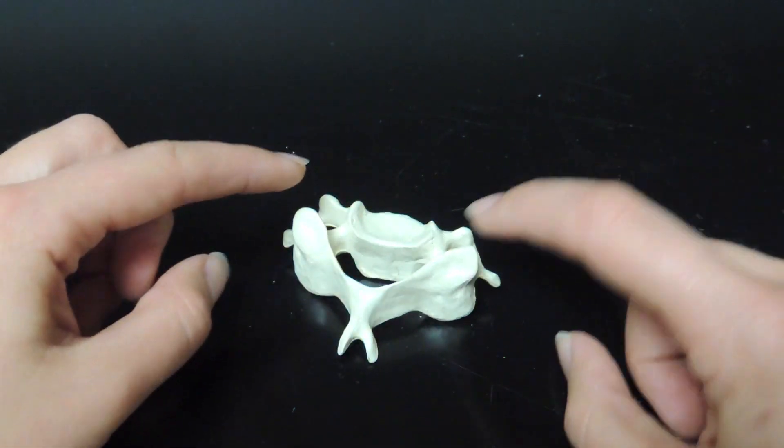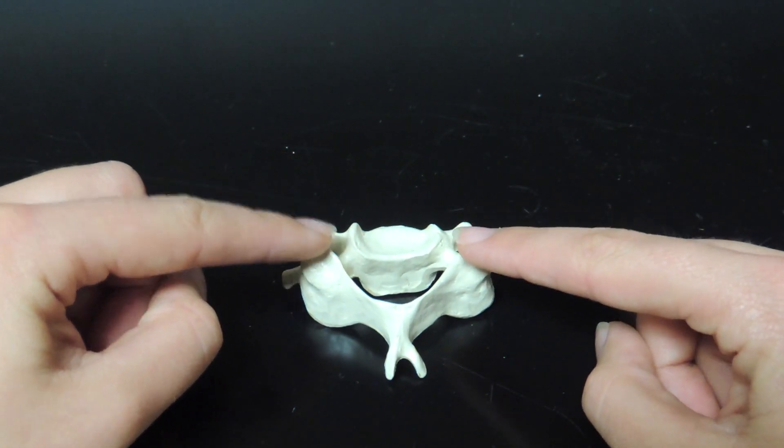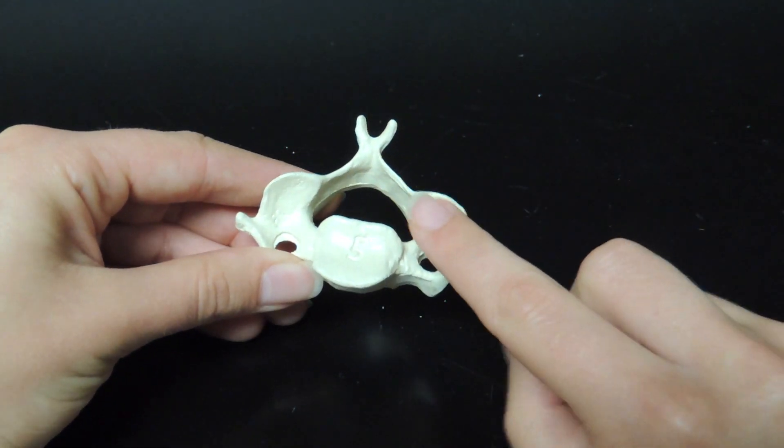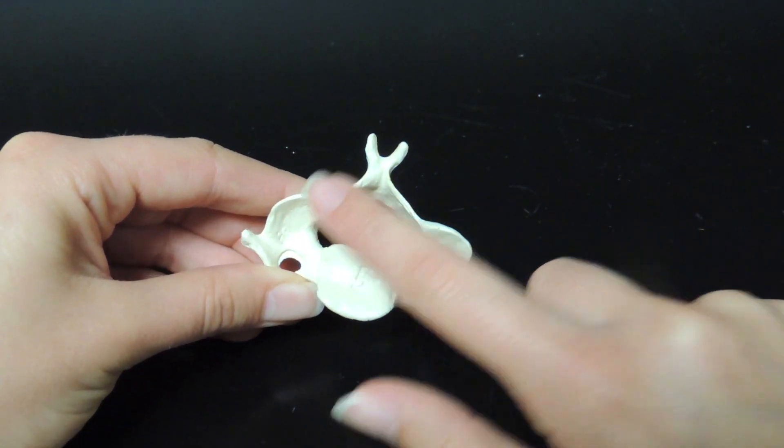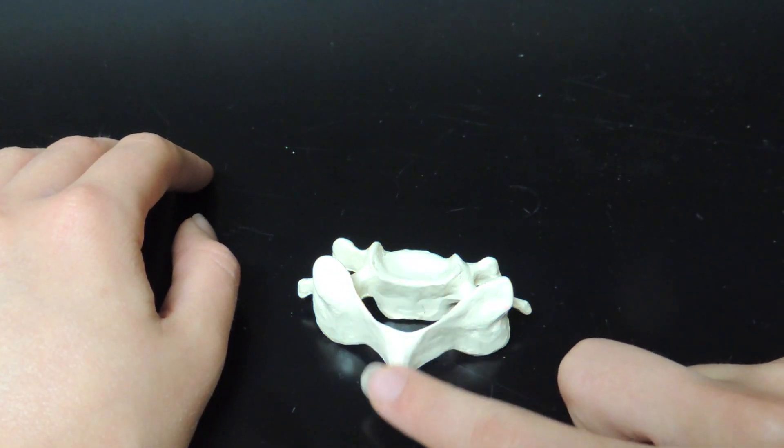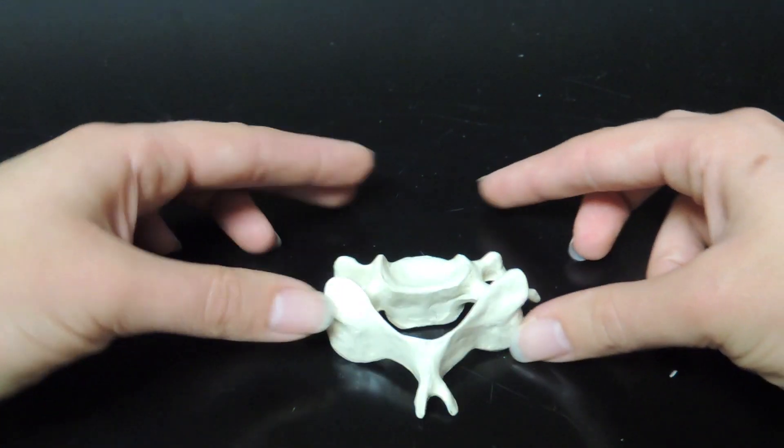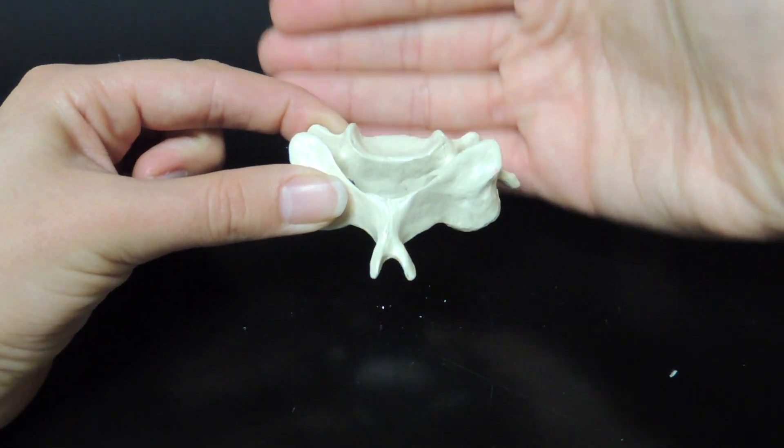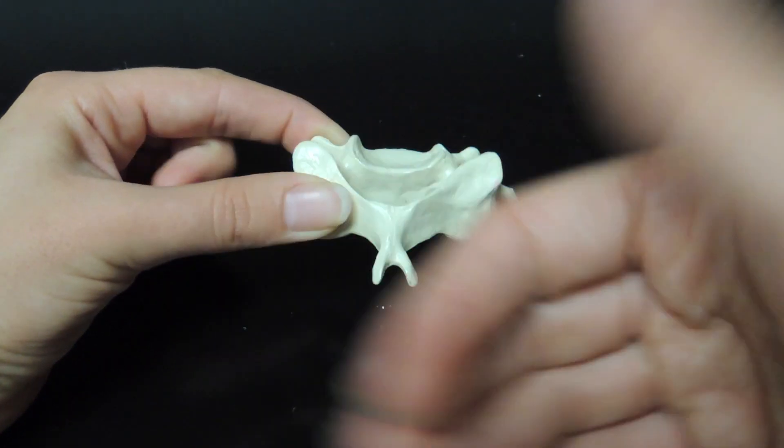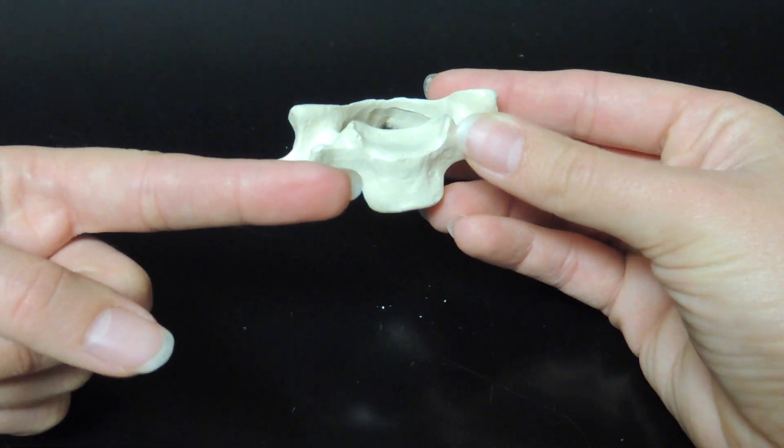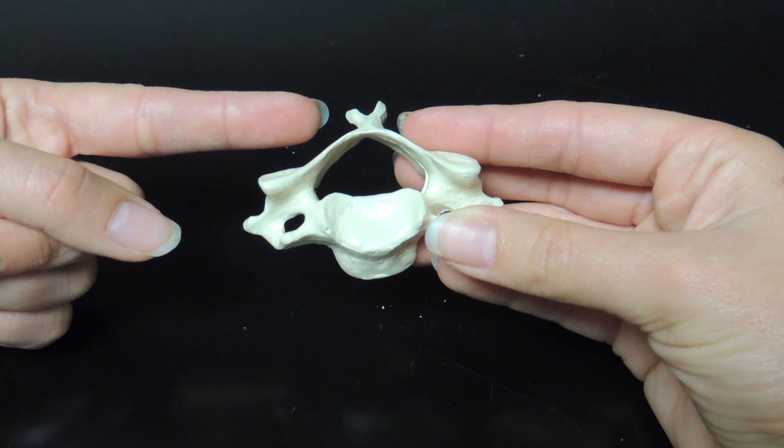Then you've got the superior articulating facets and the inferior articulating facets, here and here. Finally, the fishtail—the spinous process. The way I'm looking at this now, this is the anterior portion and this is the posterior portion.